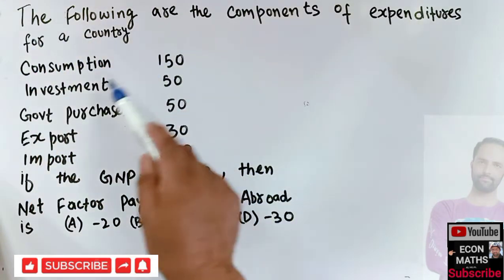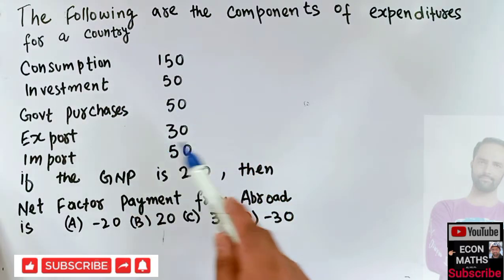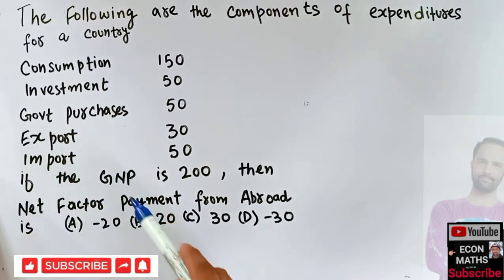Consumption is equal to 150, investment is 50, government purchases is 50, export is 30, import is 50. If the gross national product is 200, then net factor payment from abroad is? The options are minus 20, 20, 30, or minus 30.